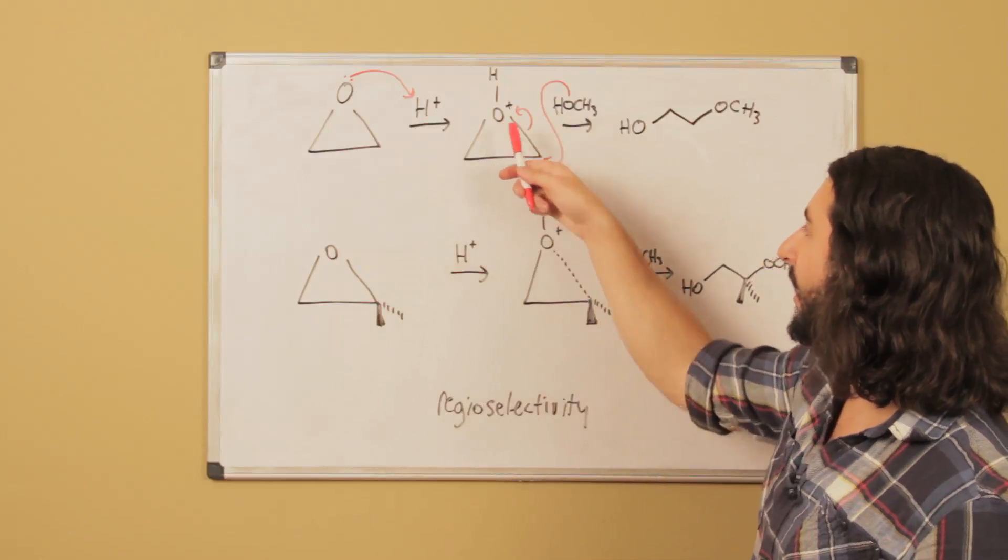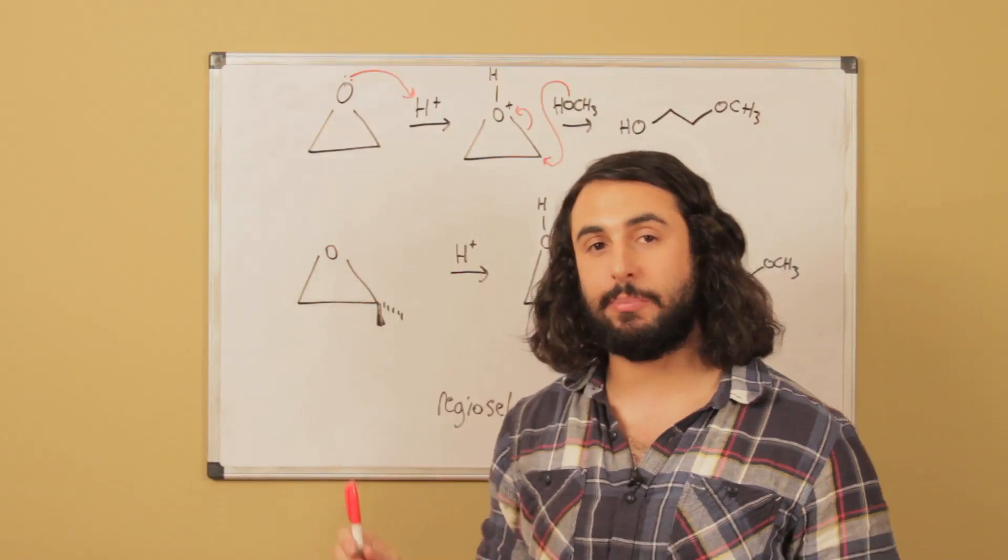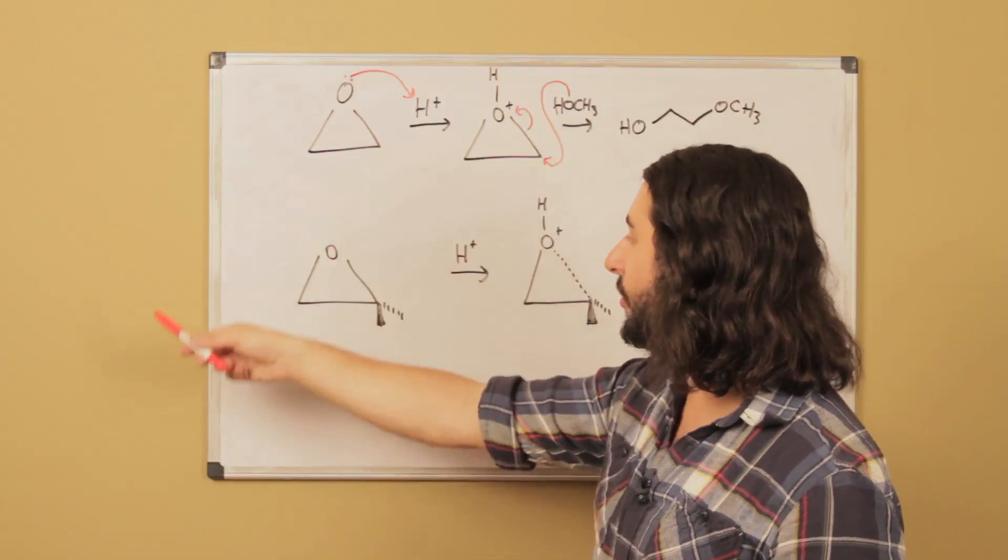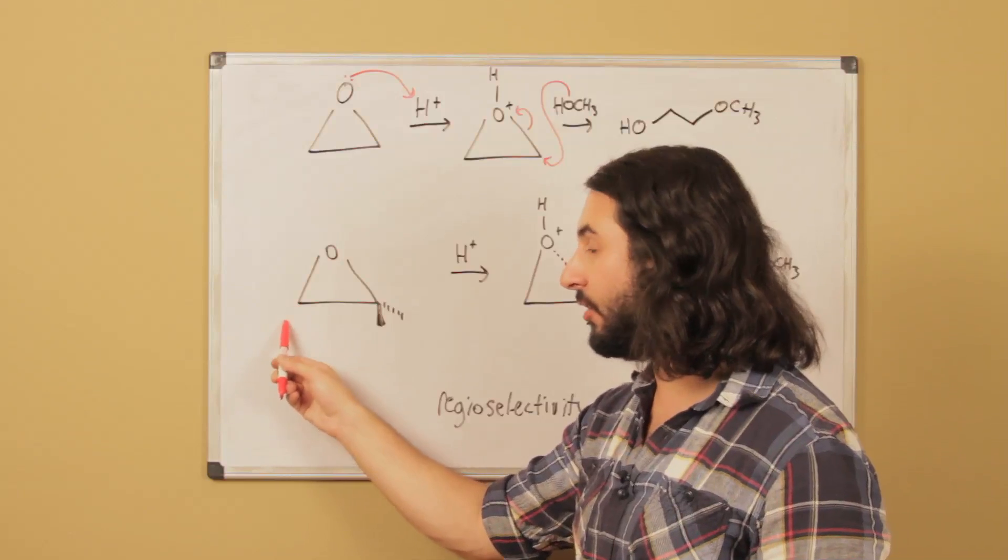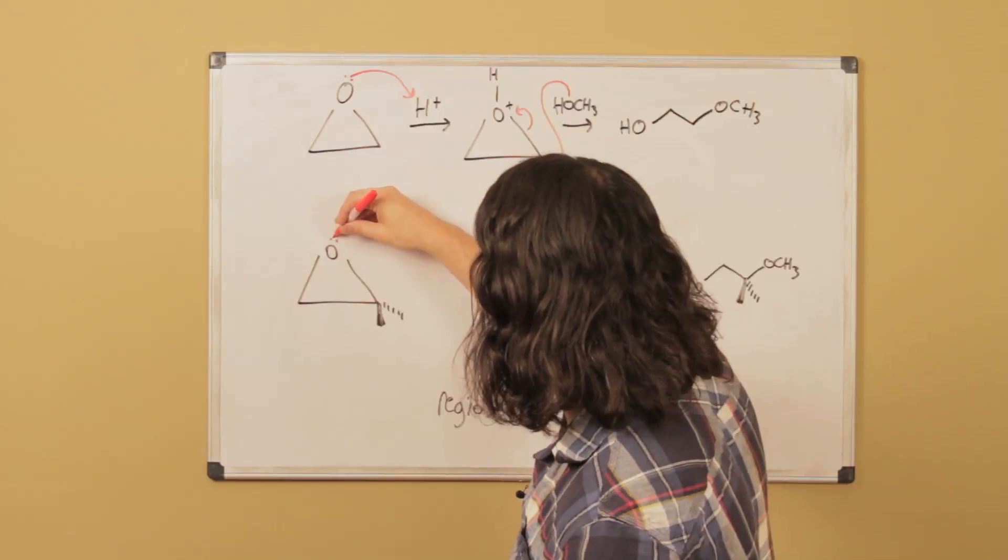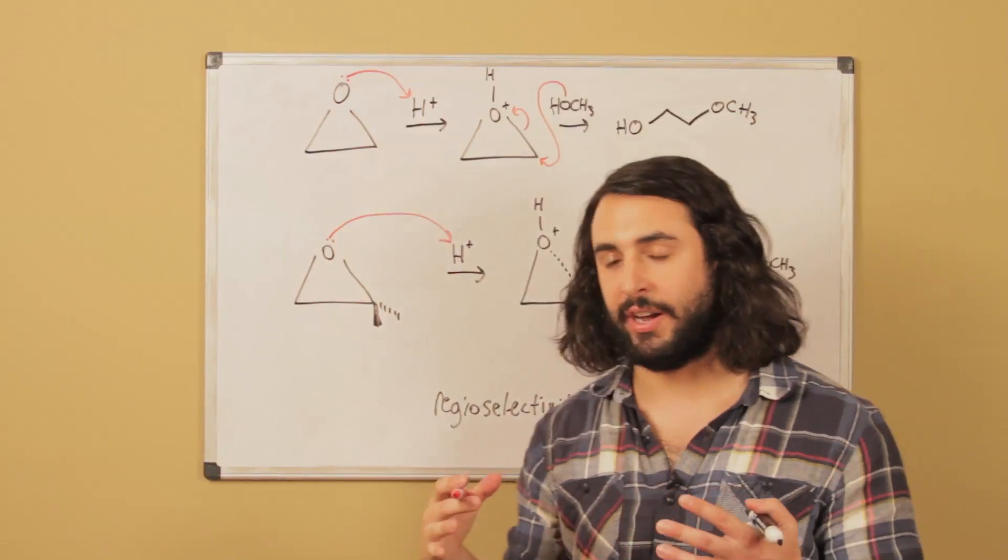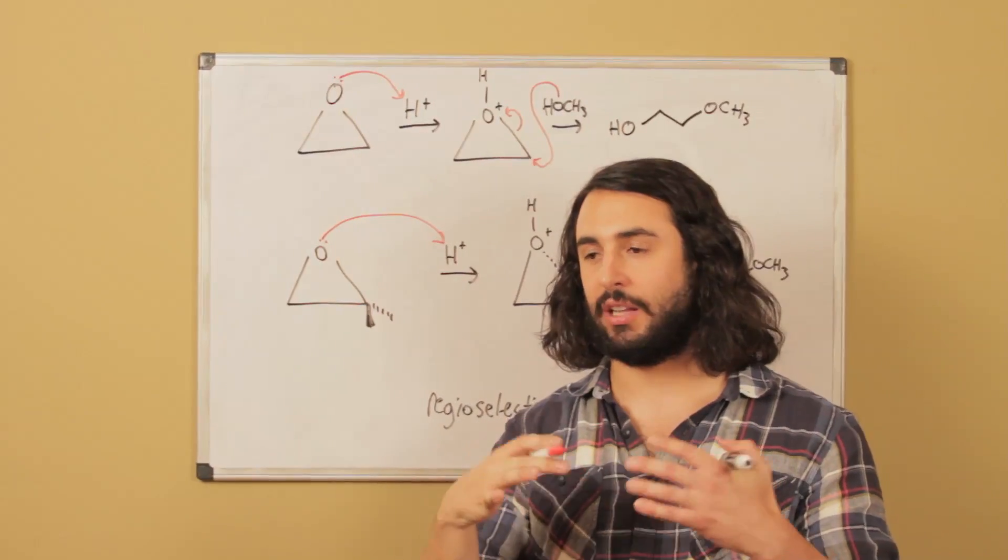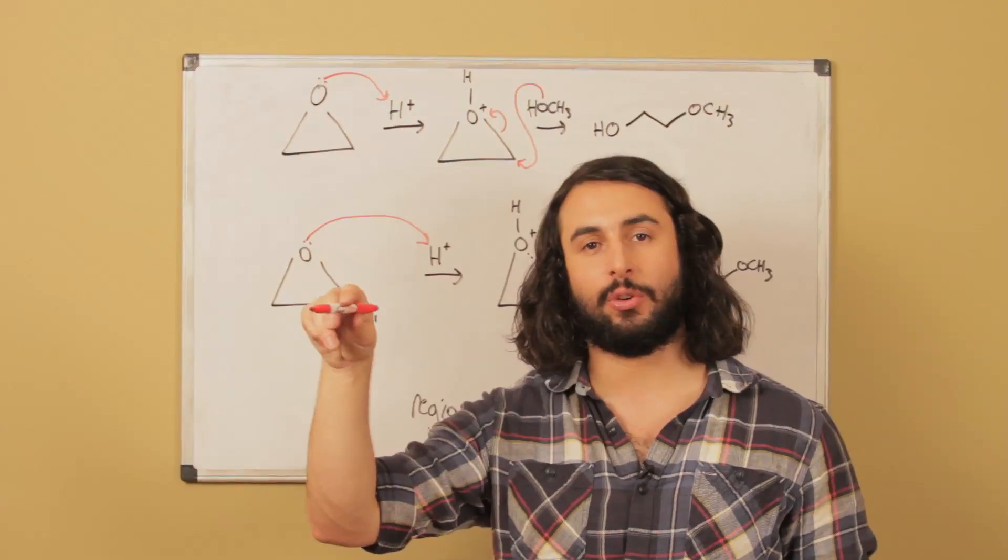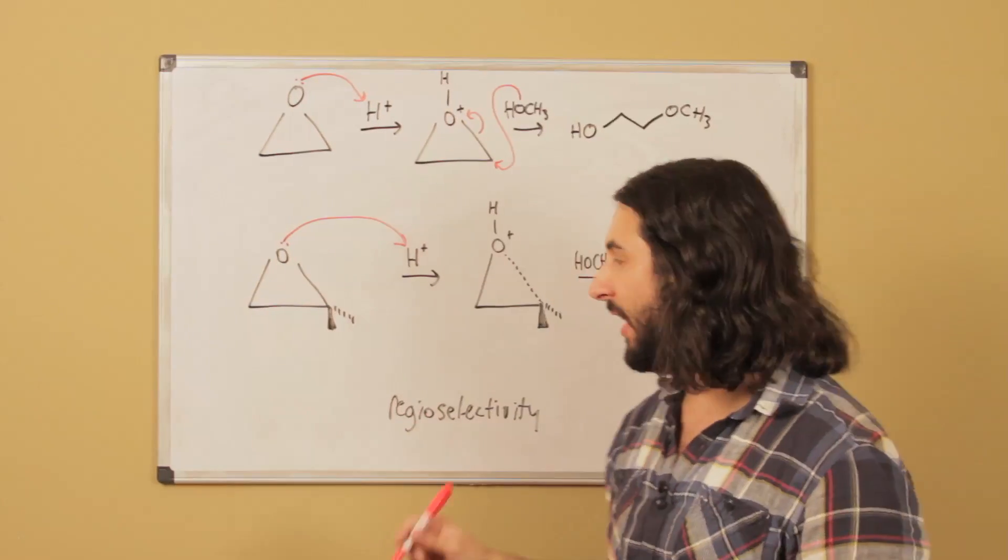We looked at the regioselectivity before where a strong nucleophile was going to want to substitute at the less sterically hindering position. Now here's the thing. Let's say we're looking at acidic conditions here, so now we protonate again. You know how to do an SN1, we might protonate a hydroxyl and then we've got a water leaving group, so the water is going to leave, it's going to leave a carbocation. This is a little bit like that.